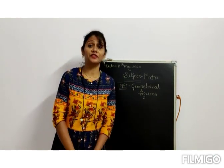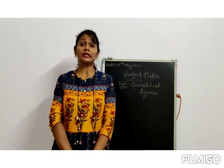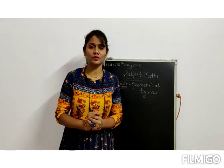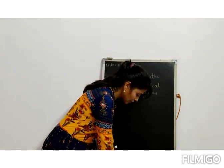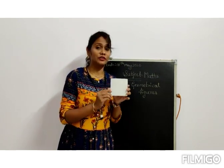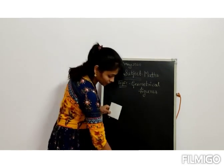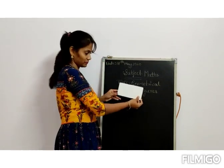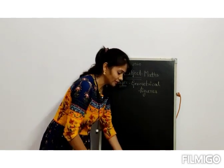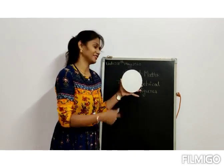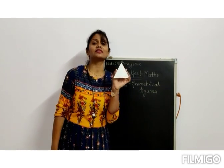Come, let's start our first topic, first chapter, Geometrical Figures. So students, in 3rd standard you have already learnt about some basic geometrical shapes. Let's recall those shapes. The first basic shape — can you guess? Yes, this is a square. What about this one? It is a rectangle. And this one — round round — which one is this? Yes, this is a circle. And this one? Pointed — this one is a triangle.